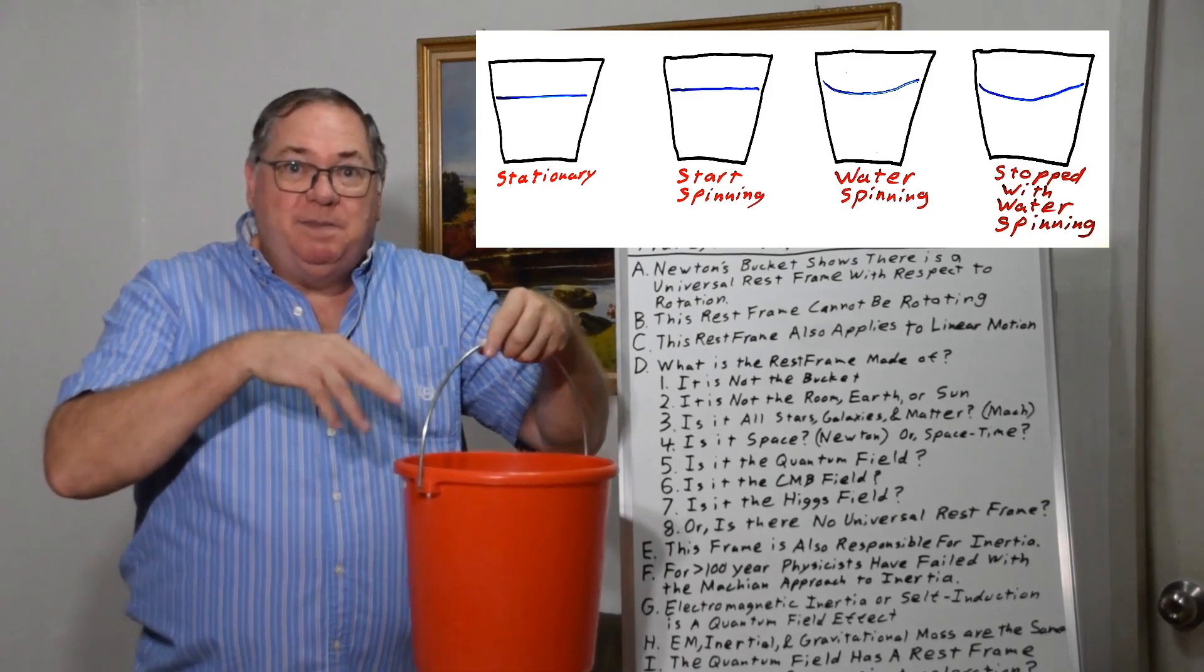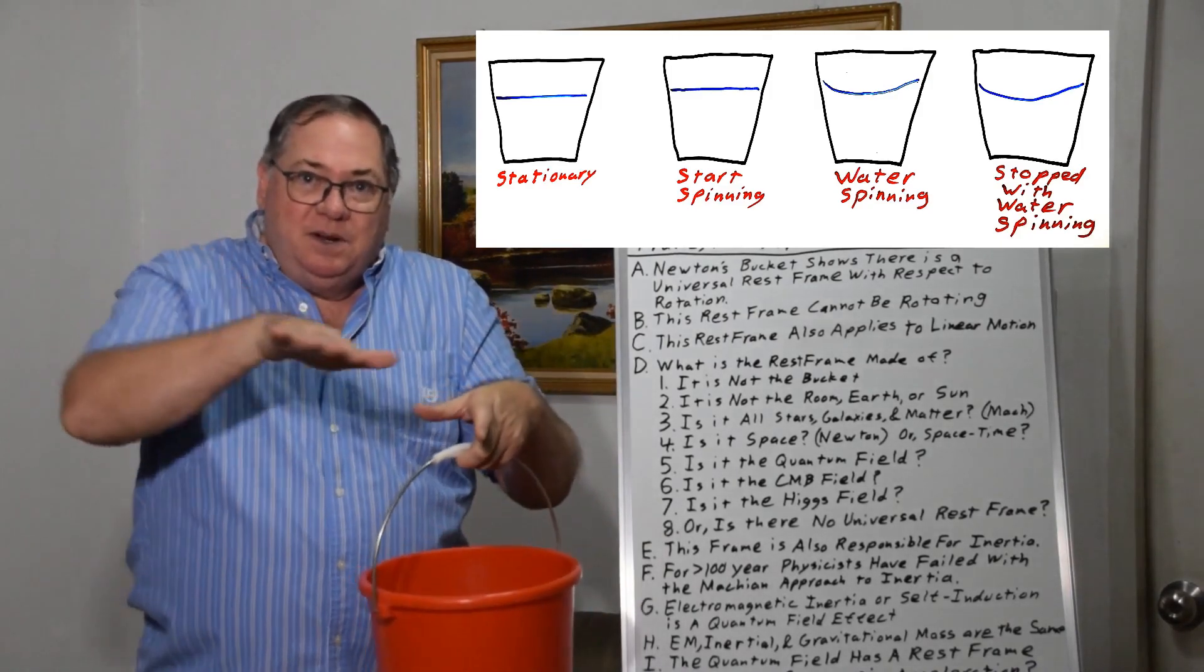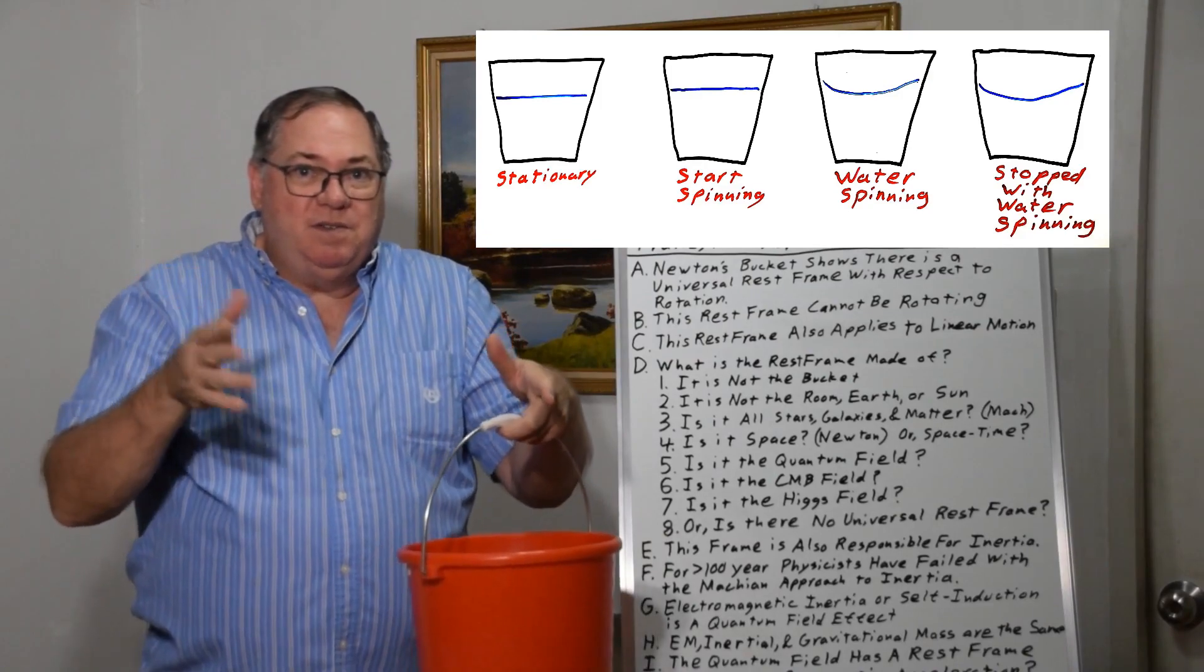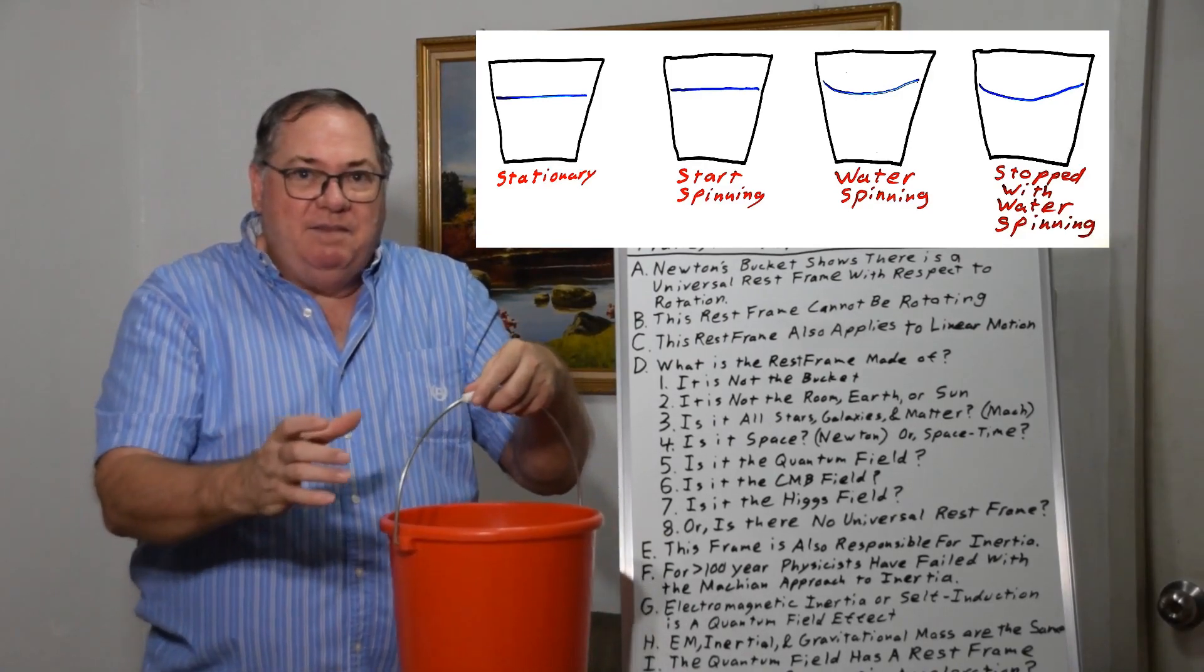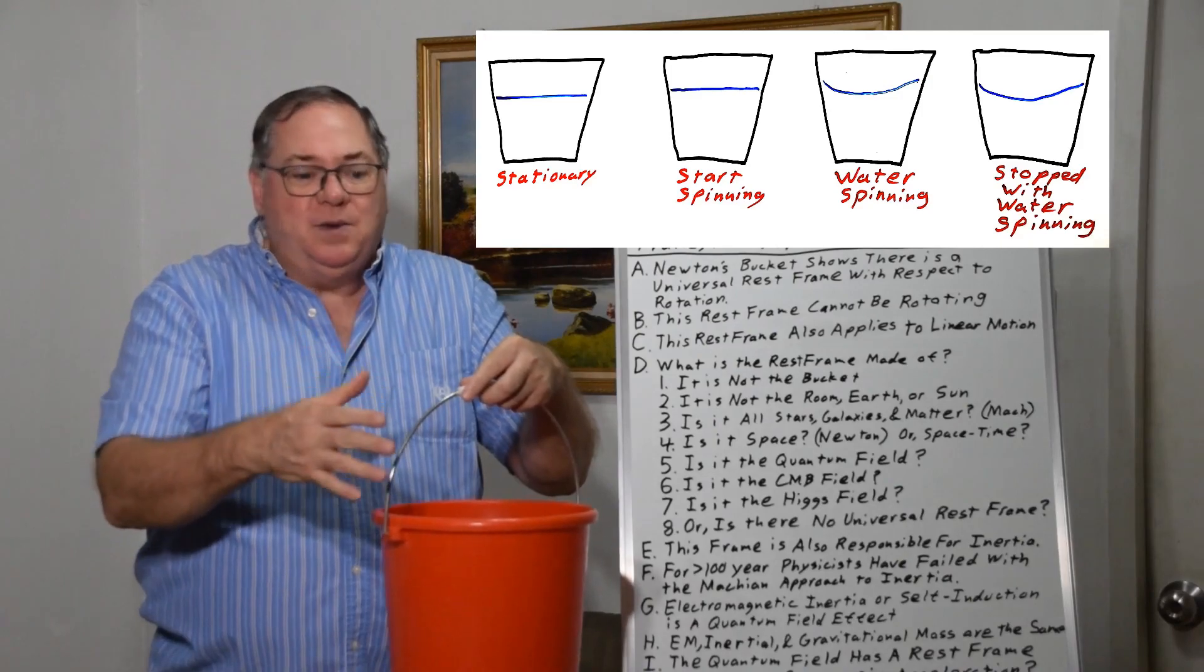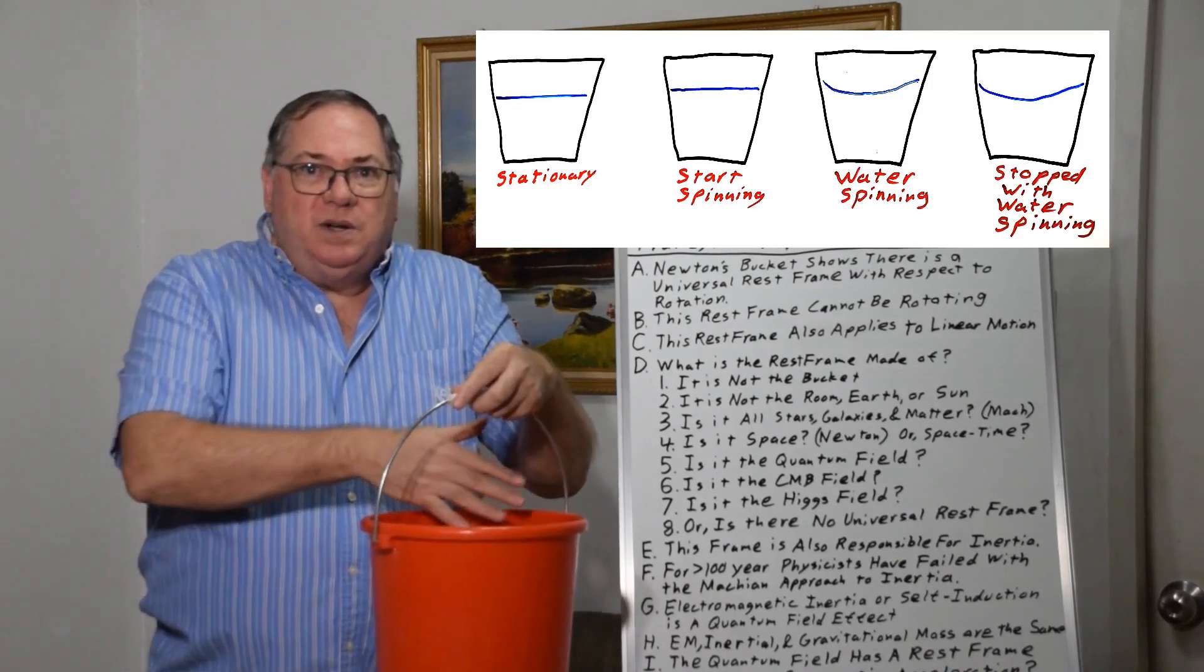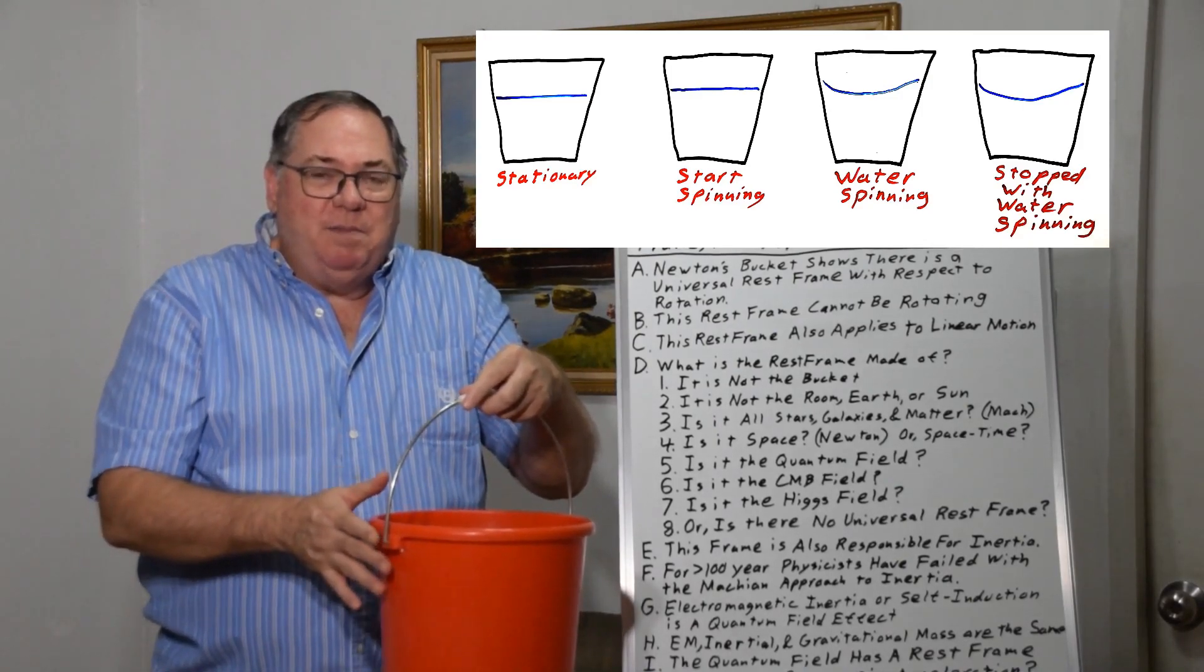Then when the water gets up to the speed of the bucket, it becomes curved, so you have some centrifugal force effect. And then if he reached out and stopped the bucket, or it stopped at the end of the twist, then the water is still curved for a while, even though the bucket stopped.